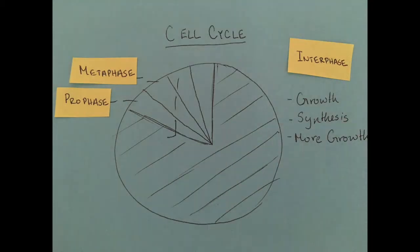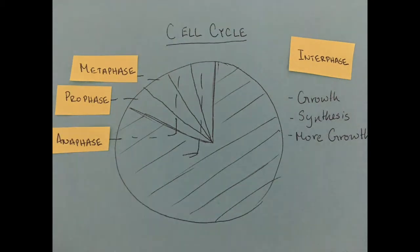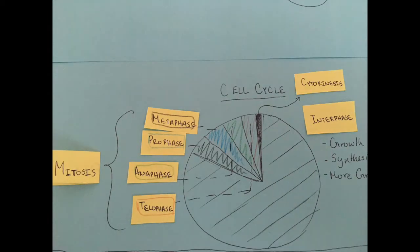Then there is prophase, metaphase, anaphase, and telophase. These four steps together make up mitosis. Afterward, there is cytokinesis.